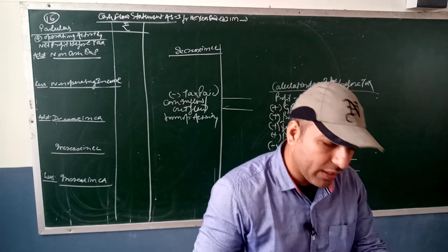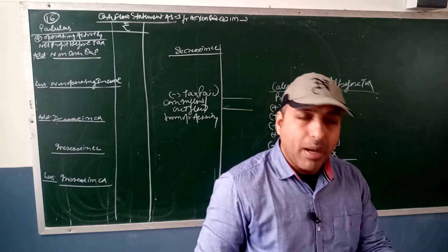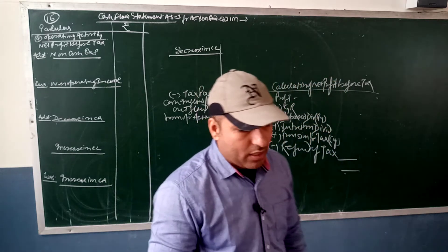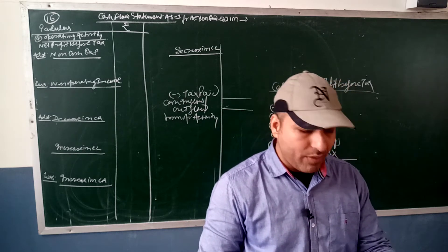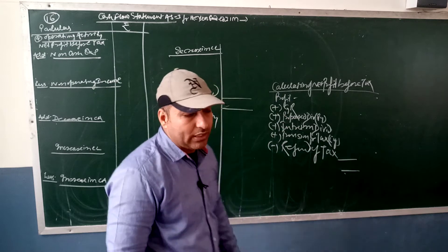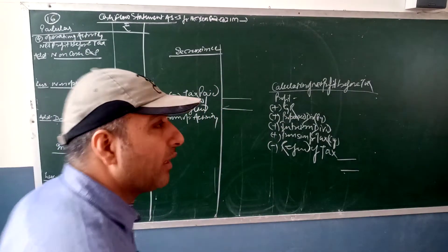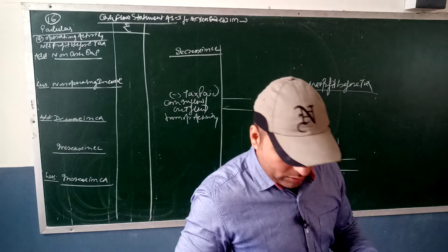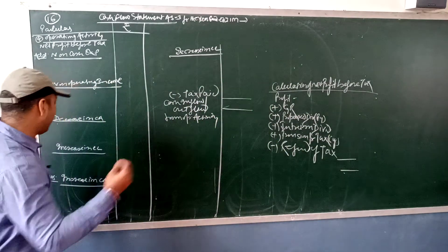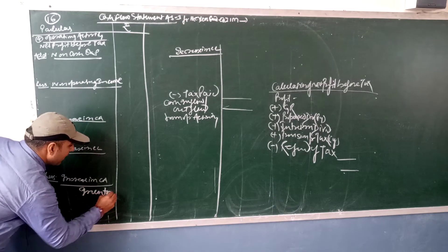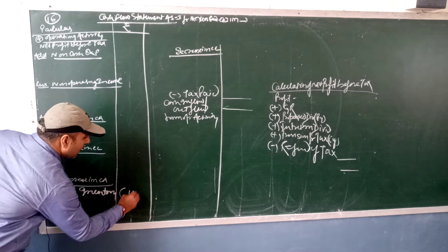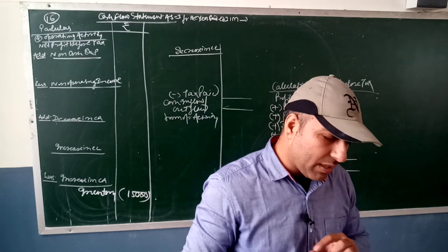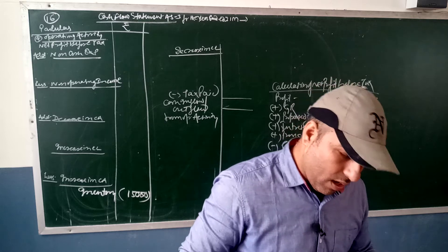From the following statement of profit and loss for the year ended 31st March 2018, calculate the amount of cash generated from operating activity. Revenue from sales is given. Regarding inventory: last year closing inventory was 85,000 and this year's inventory is one lakh rupees. So stock, which is a current asset, has increased by 15,000. Since inventory has increased, it will appear as a minus of 15,000.